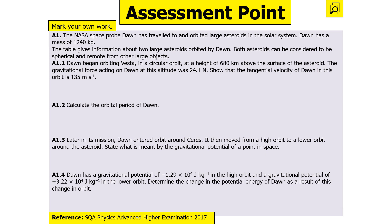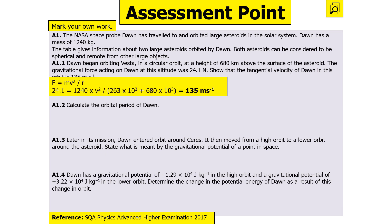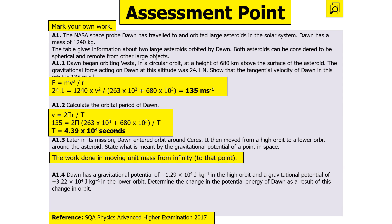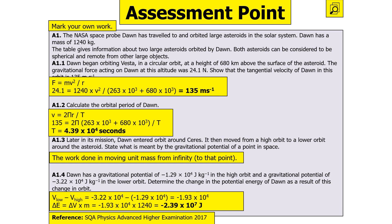For tangential velocity: F = mv²/R — we have all values except v, and R must include the asteroid's radius. This gives v = 135 m/s. Orbital period: v = 2πR/T, so T = 2πR/v = 4.39 × 10⁴ s. Gravitational potential is the work done in moving a unit mass from infinity to that point in the gravitational field. Change in potential = −3.22 × 10⁴ − (−1.29 × 10⁴) = −1.93 × 10⁴ J/kg. Work done = mass × change in potential = 1,240 × (−1.93 × 10⁴) = −2.39 × 10⁷ J.